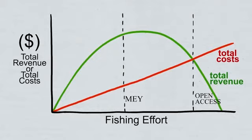Putting effort in past the maximum economic yield doesn't optimize the economic rent. Fishing past the maximum sustainable yield damages the fish stock and doesn't even maximize revenue. Allowing open access is just dangerous and leaves the stock vulnerable to collapse.